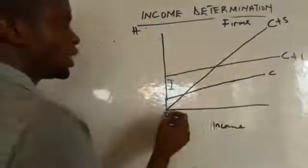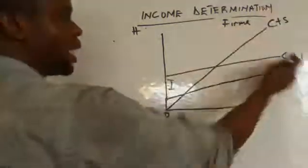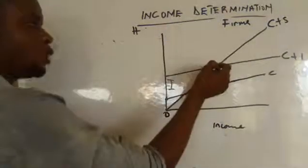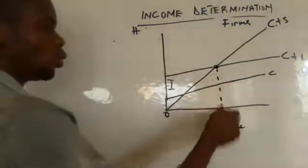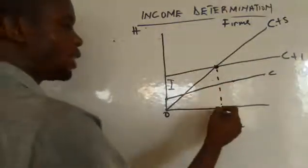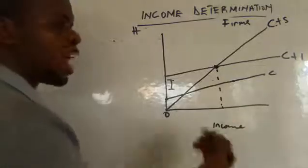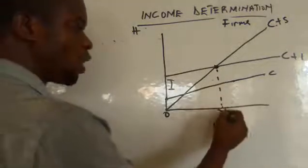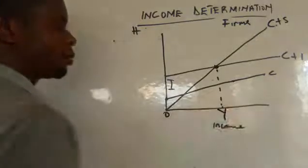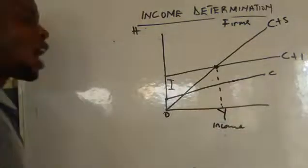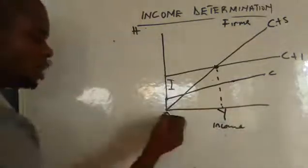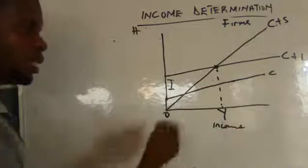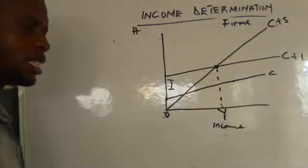The equality of supply and demand is attained at the intersection point. We draw it down to give us our output and determine our GDP level. Our GDP level at the initial stage is from 0 to Y1.